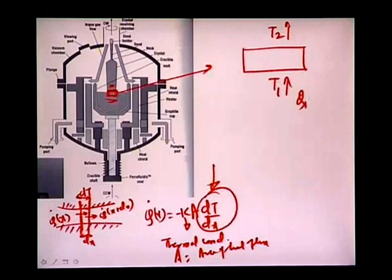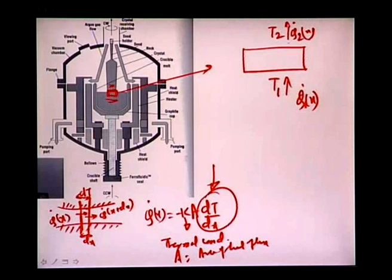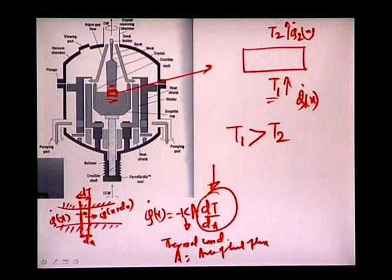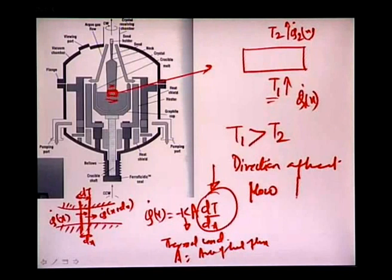Considering the zone of fusion, heat flow q1 comes from the liquid into the zone of fusion, and heat flow q2 goes from the zone of fusion into the solid. Since T1 (liquid) is much greater than T2 (solid), heat flows from T1 to T2. The solid silicon grows from the small zone of fusion surrounded by the liquid state.